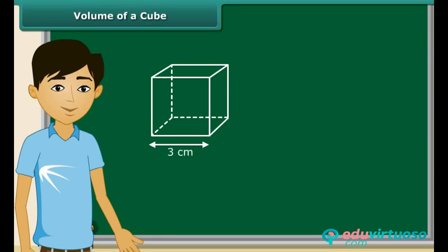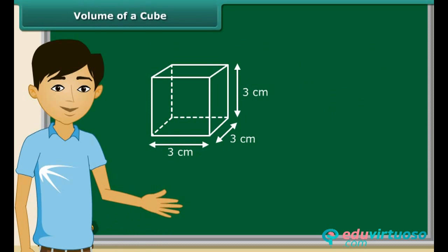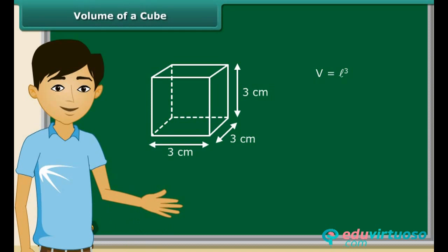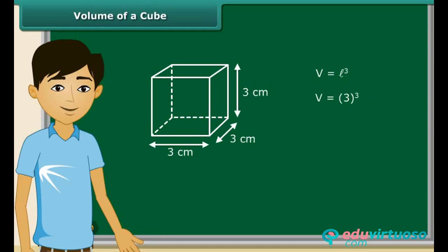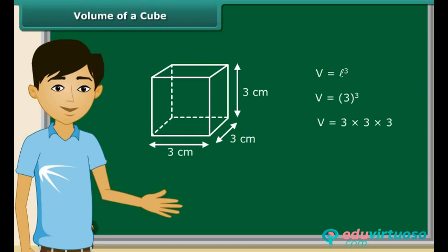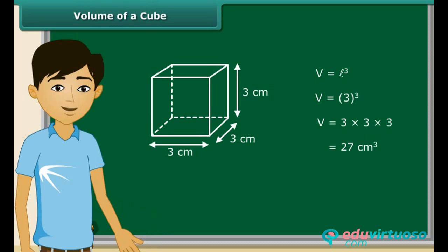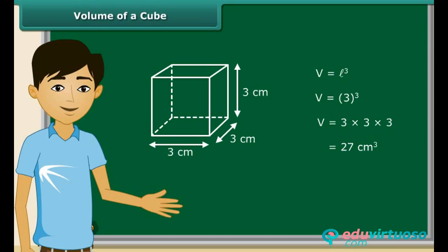Let's take a look at an example. Here we have a cube having a length of each side equal to 3 cm. To find its volume, we use the formula V equals L cube. Since the length is 3 cm, we substitute L with 3. 3 to the power of 3 equals 3 multiplied by 3 multiplied by 3, which gives 27. Since the unit for length is cm, the unit for volume will be cubic cm. Hence, the volume of this cube is 27 cm³.